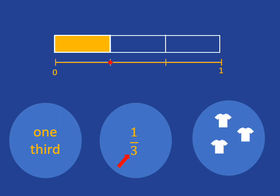And in terms of my collection of t-shirts, if I've got a whole collection of three t-shirts and one of them is yellow, I can say that one third of my collection of t-shirts is yellow.